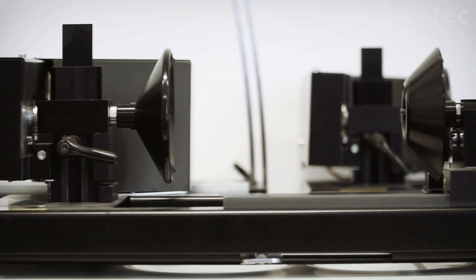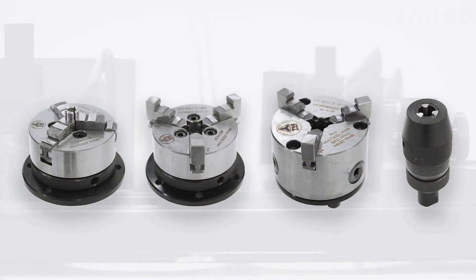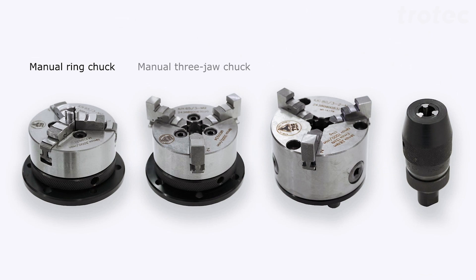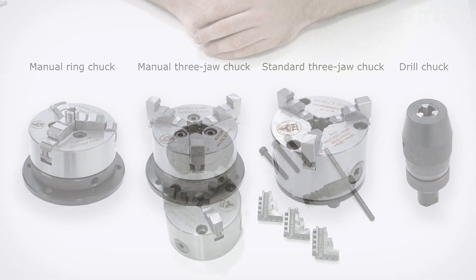There are also attachments to the rotary other than cones. You have the manual ring chuck, the manual three jaw chuck, the standard three jaw chuck, and the jaw chuck. These are used depending on the cylindrical object.